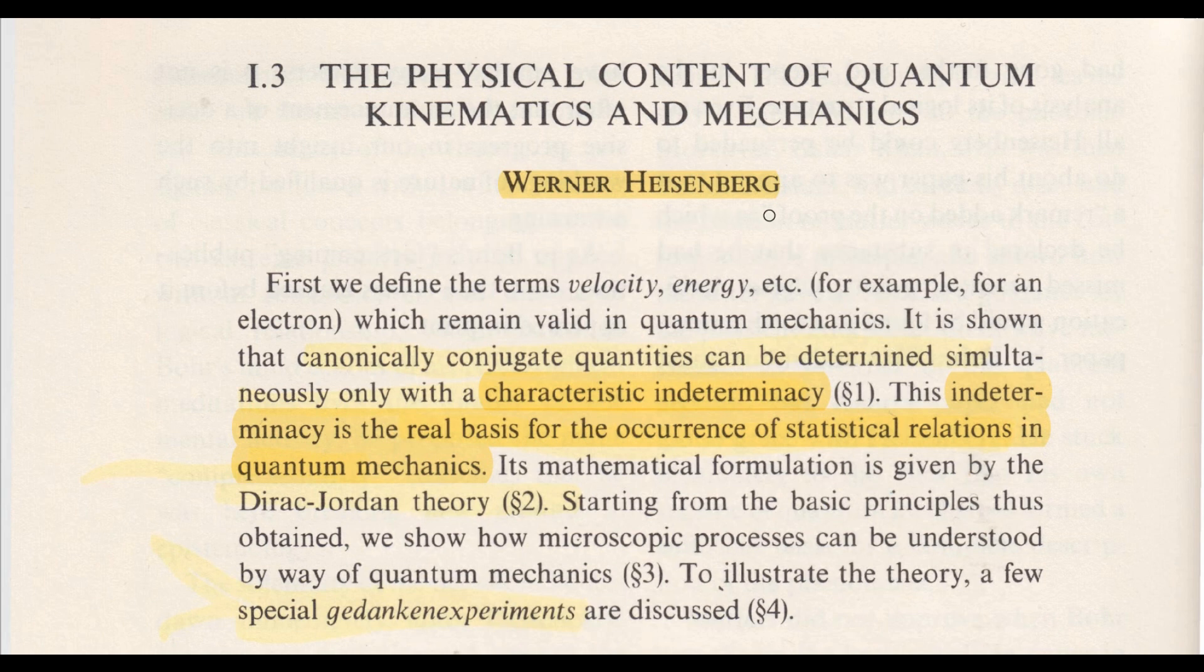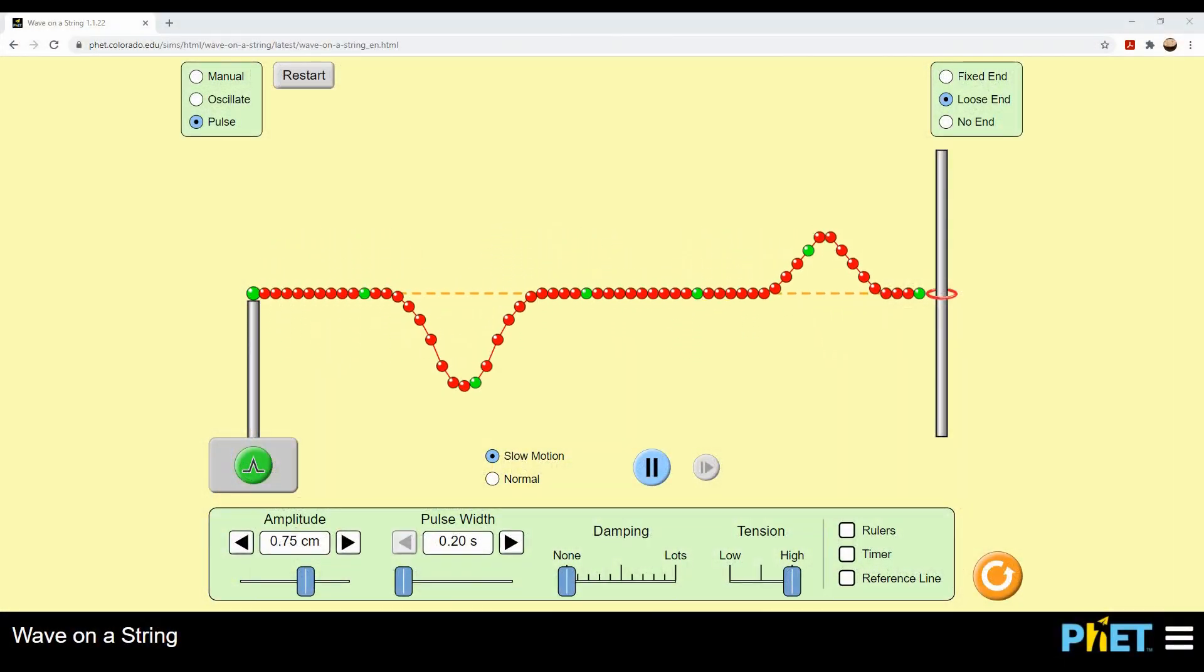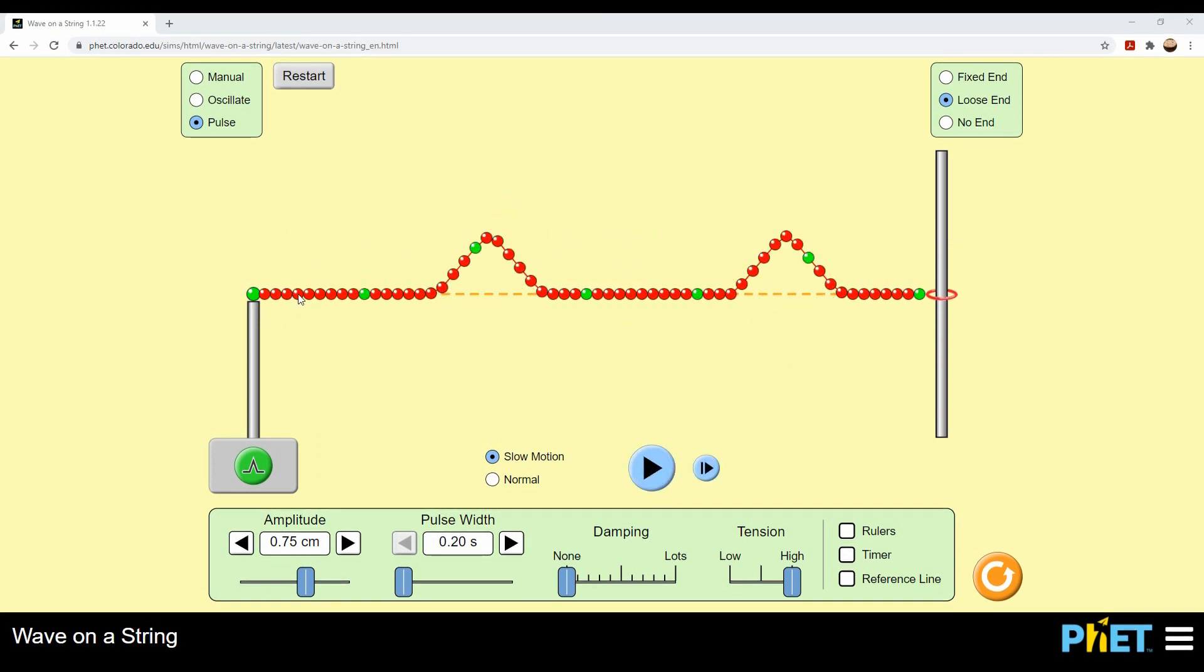We will come back to Heisenberg's paper later, but now let's look at a visual representation of what the EPR paper is describing. Schrödinger's equation describes how wave systems move. For example, you can think of this as a wave on the surface of a lake.